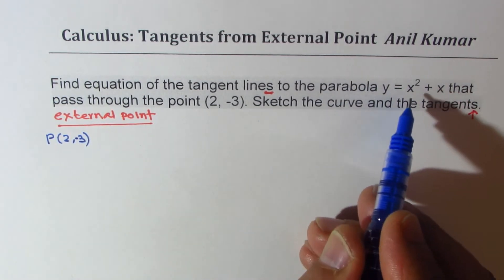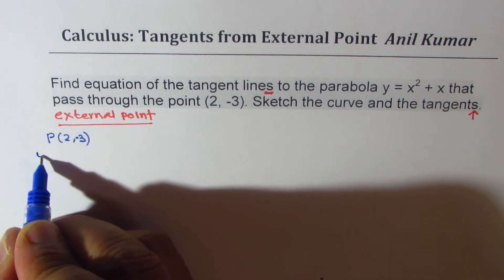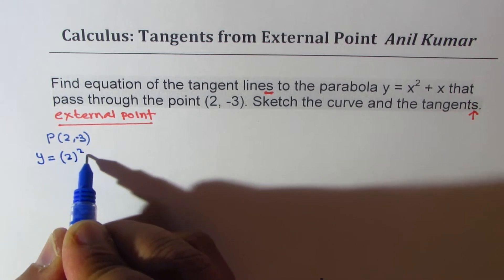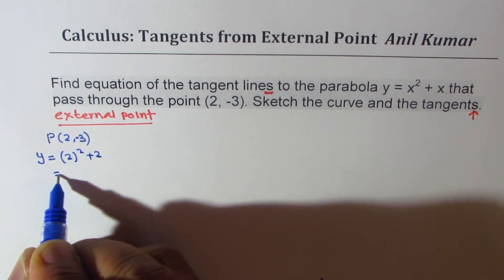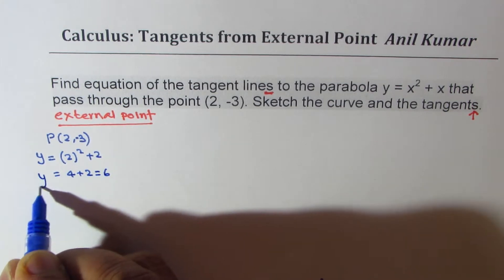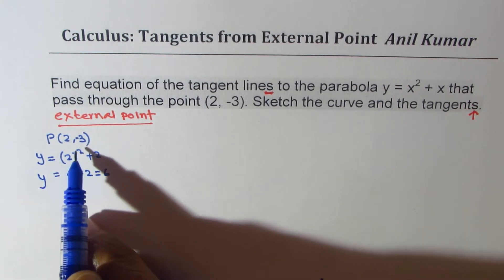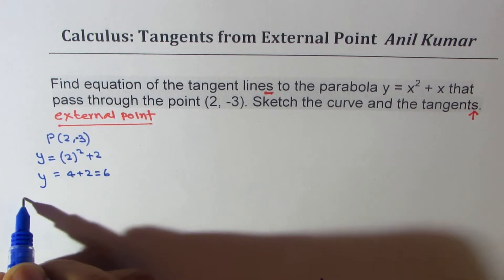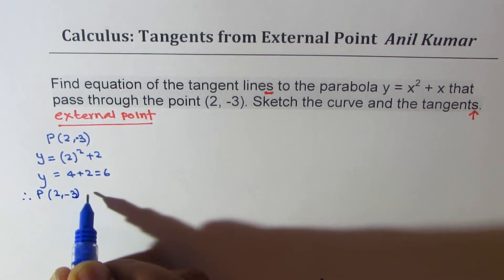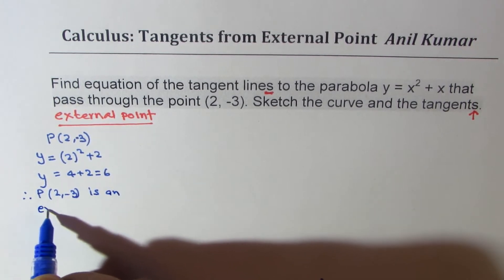Let's check. If I substitute 2 for x, what do I get? y equals 2 squared plus 2, which is 4 plus 2, which is 6. So the value of y is 6 and not minus 3. Therefore, the point (2, -3) is an external point.